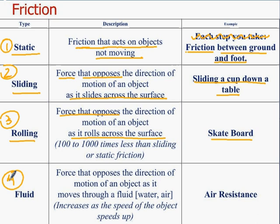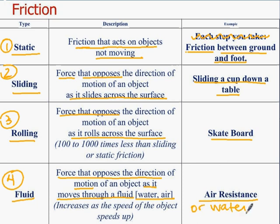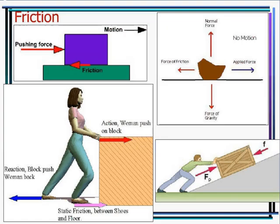The fourth type is fluid friction. It is a force that opposes motion as an object moves through a fluid. Most people don't think of air as a fluid, but it is — water and air both count. This friction increases as speed increases. For example, if you stick your hand out of a car window, you feel the fluid friction, also known as air resistance.